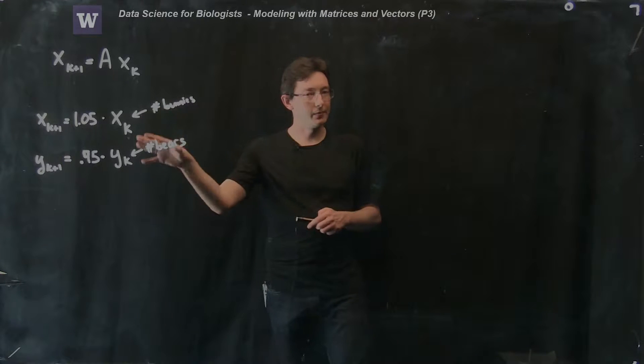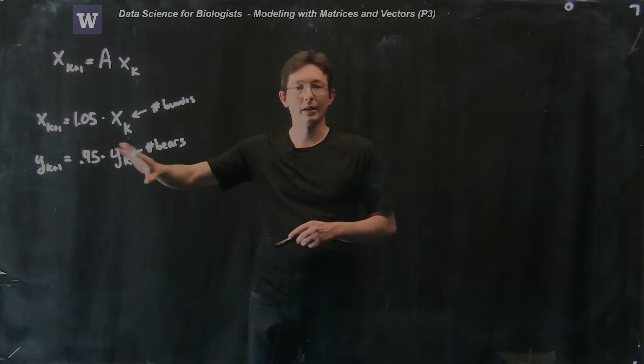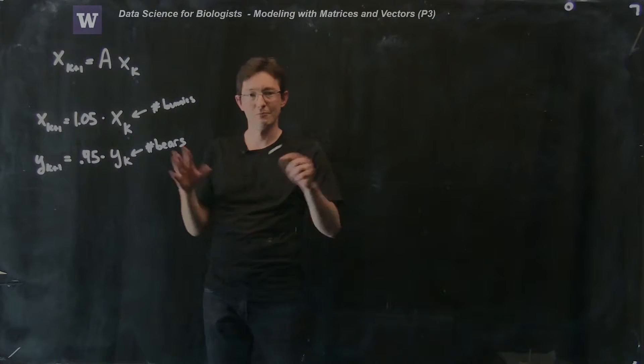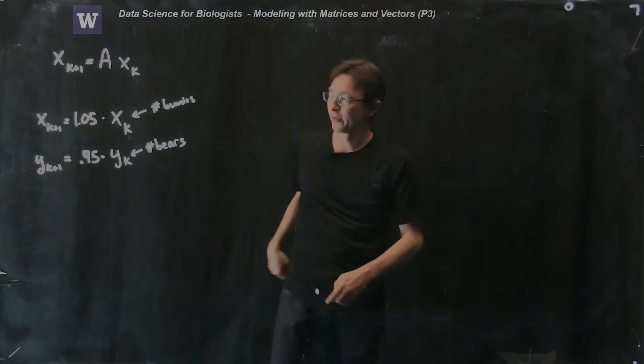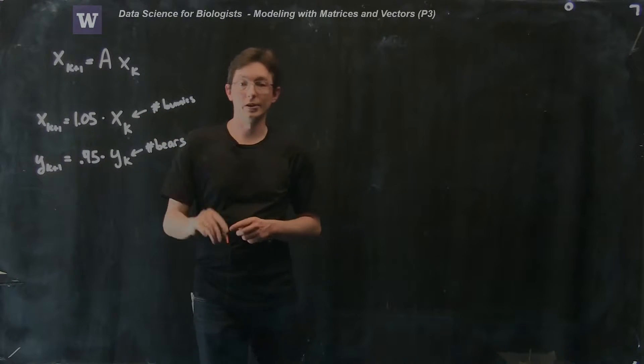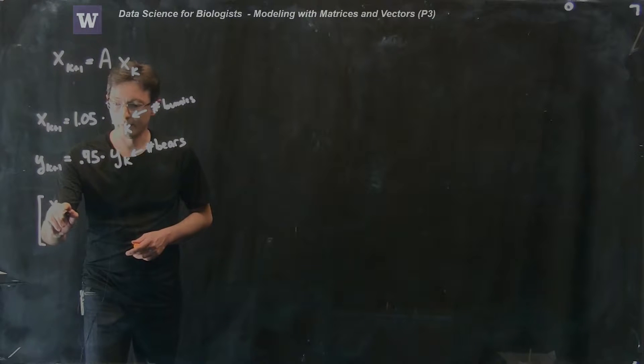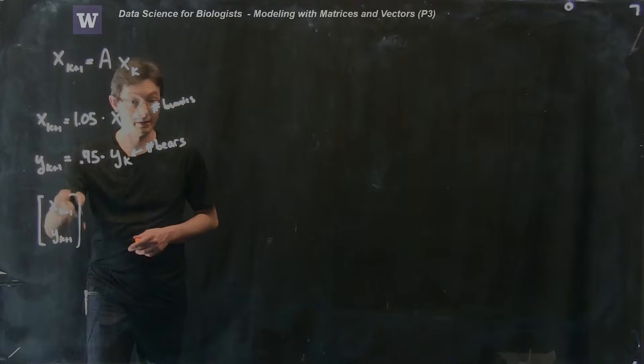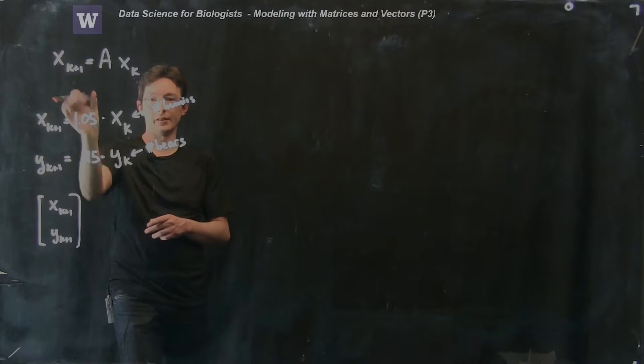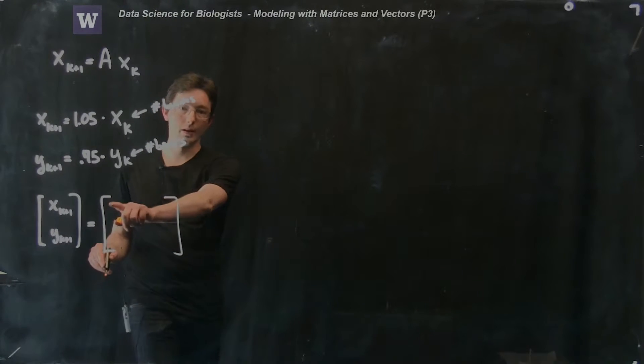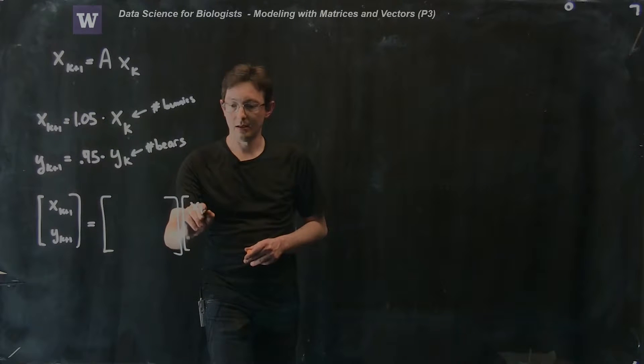Now, this is a really simple and contrived system where these are completely independent. I'm assuming that bunnies live their lives, bears live their lives, and they never mix or meet or eat or whatever. Then I can write this as a system of equations. I can say x_k+1 and y_k+1. This is a vector. This is kind of like this vector here. Equals a matrix A here times x_k and y_k.